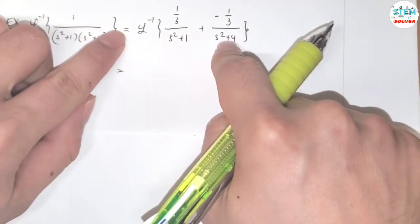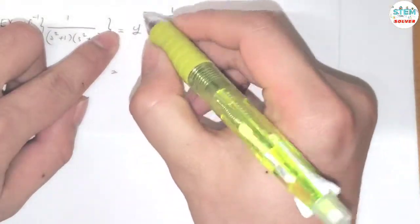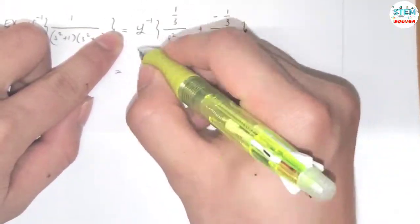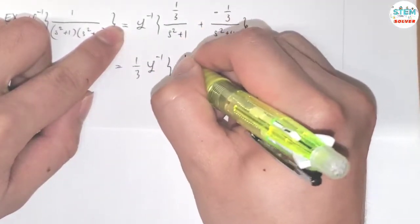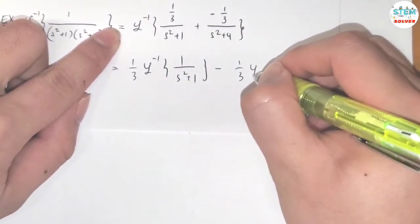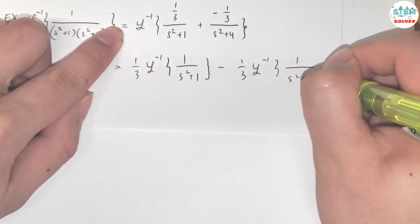Now, I'm going to write this down into two fractions and apply the inverse to it. Factor 1 third, I have L inverse of 1 over x squared plus 1, minus 1 third L inverse of 1 over x squared plus 4.